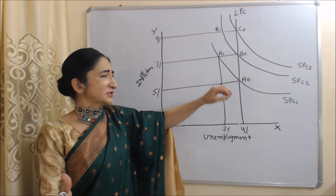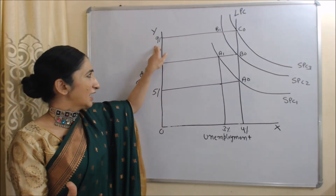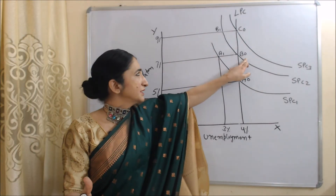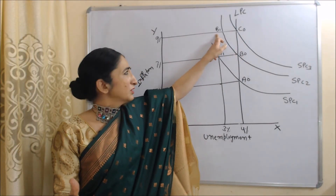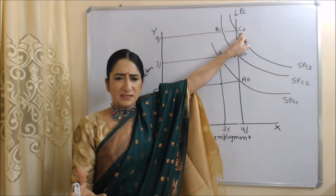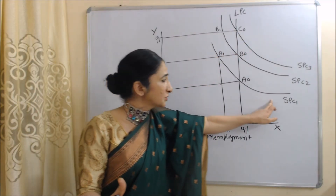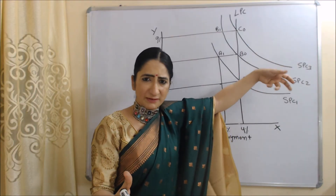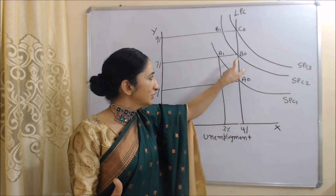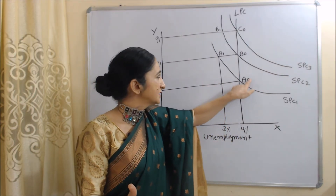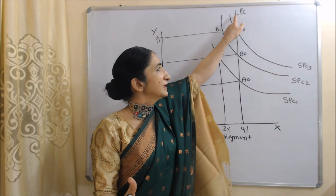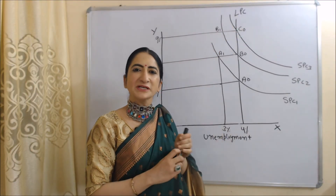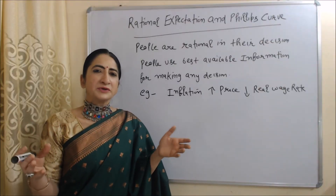So in the short time period there is some relation between inflation and unemployment, but in the long time period there is no relation. Again, it is possible that inflation increases from 7 to 9%. In the short time period we move from B0 to B1, but in the long time period we come back to C0. SPC1, SPC2, and SPC3 are short-run Phillips curves. When we join A0, B0, and C0, we get the LPC — the long-run Phillips curve.